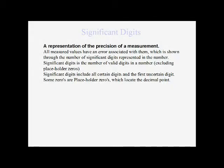These significant digits that we're going to use — our first step is in the measurement. When we get a measurement, we're going to use the whole number of the measurements. If we weigh something on a digital scale, we're going to use the whole number the scale gives us. If we read an analog thermometer, we want to estimate between the lines to get the most precise value. That's all fine and dandy, but what happens when we start to multiply, divide, add, or subtract the numbers that we have? This is where we really need to know the significant digits and the rules that go along with them.